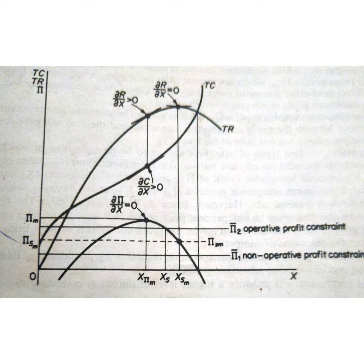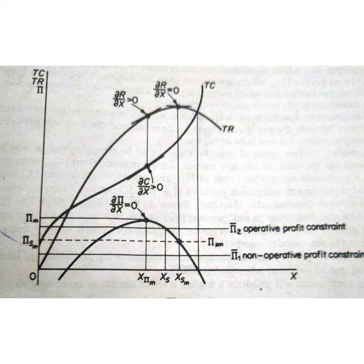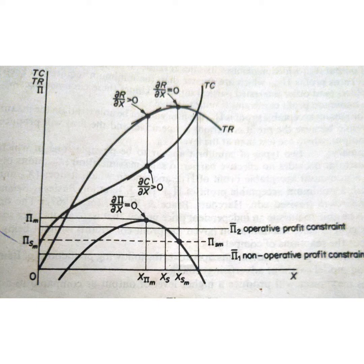If the minimum acceptable level of profit is pi 1, the firm will produce output level X SM, which maximizes its sales revenue. At output X SM, the firm earns profit pi SM, which is greater than the minimum required to satisfy stakeholder interests. In these circumstances, the minimum profit constraint is not operative. However, if the minimum acceptable profit is pi 2, the firm will not be able to attain maximum sales revenue because the profit constraint is operative. The firm will then produce XS units of output, which are less than X SM.